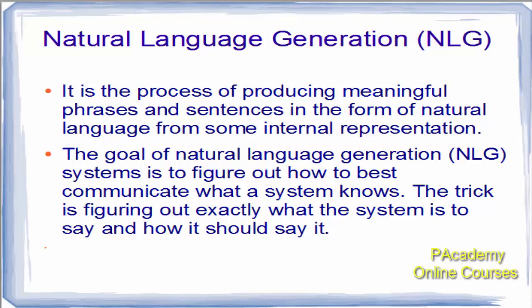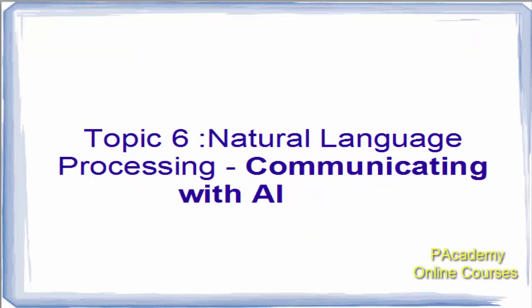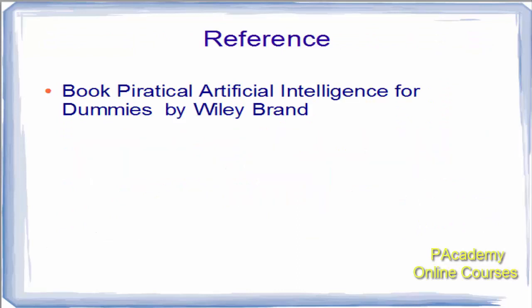Natural language generation is used as an output means — a way in which the system can communicate back to the environment and to people. That's all about natural language processing. If you like this video, please subscribe, like, and comment, and watch other videos in the series to complete the course and learn more about artificial intelligence.